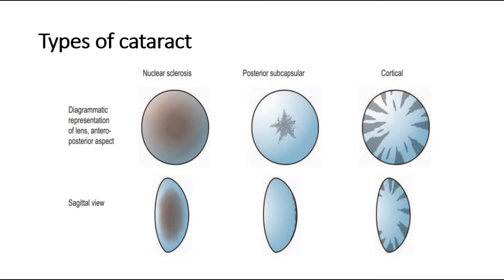For cortical cataract, there will be peripheral opacities. This type of cataract usually has no effect on vision, but opacities that encroach upon the visual axis will affect vision, and that's when treatment is indicated.